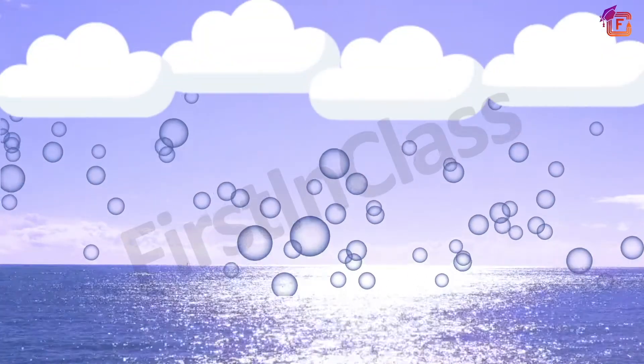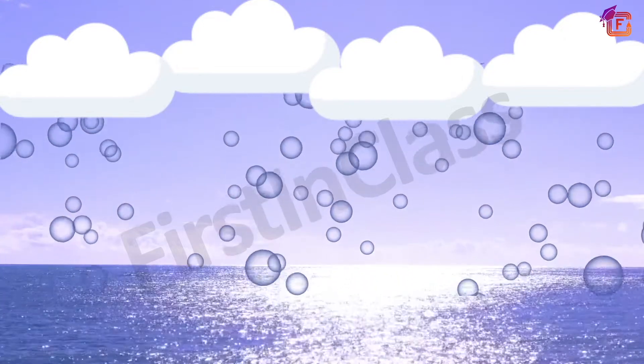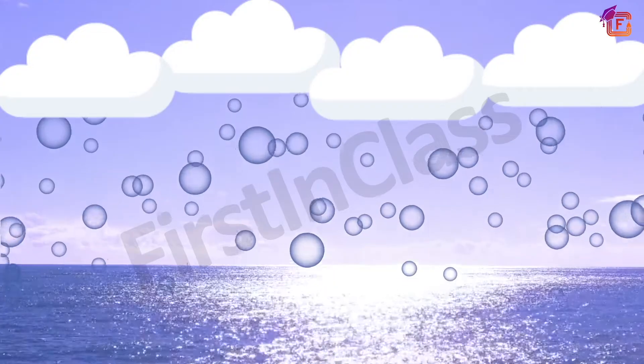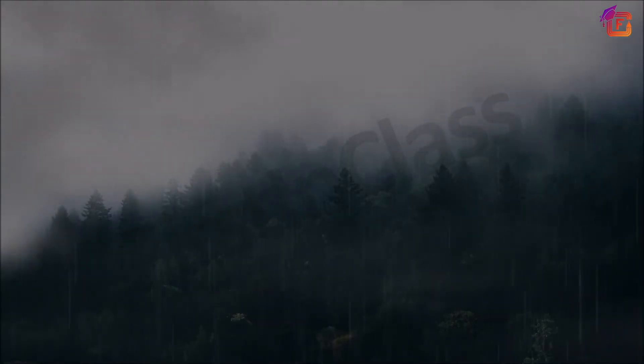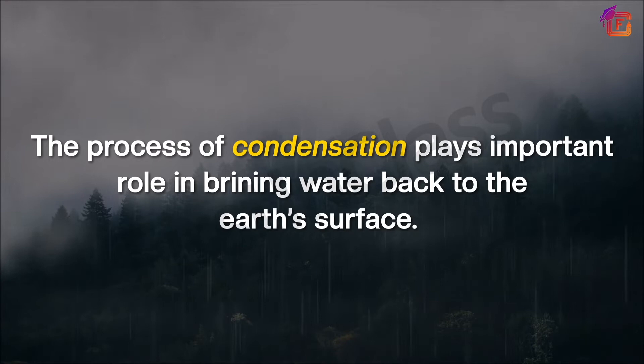These particles act as a catalyst and provide a surface for the process of condensation. These tiny water droplets remain floating in the air and appear as clouds. The tiny water droplets in the cloud join together to form bigger water droplets. Windy movement causes the cloud particles to collide with each other, and as they become heavy they form rain-bearing clouds.